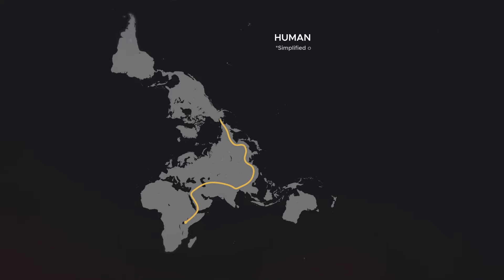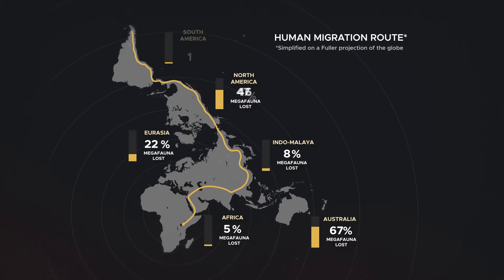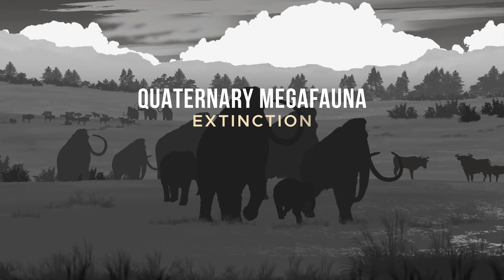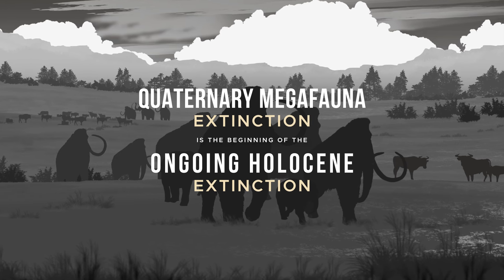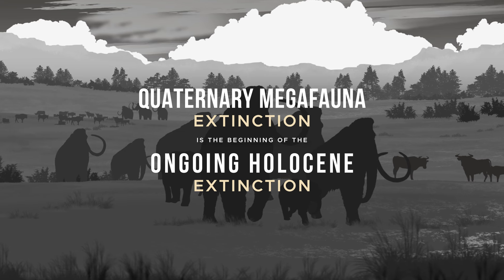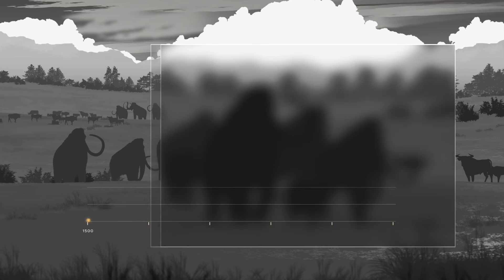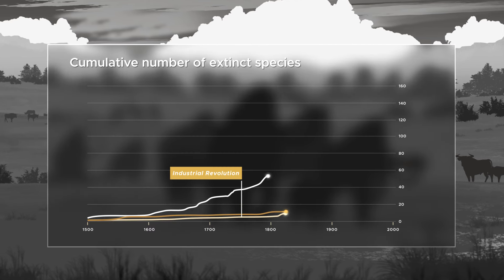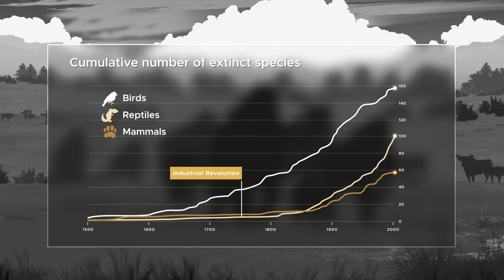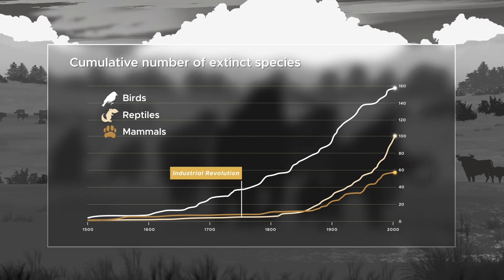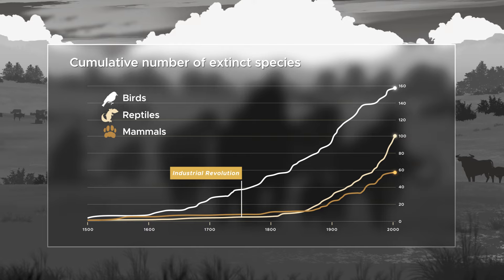The casualties were proportionately higher the further away these animals were from Africa, indicating that animals that did not evolve alongside hominids in their ecosystems were a lot more vulnerable to human hunting pressures. Some consider the Quaternary Megafauna extinction as the beginning of the ongoing Holocene extinction, but some argue these are separate events, since the rate of biodiversity loss since the industrial revolution is significantly faster and with greater magnitude — it now almost universally affects global biodiversity, and a remarkably larger portion of life forms are now threatened, not just large animals.